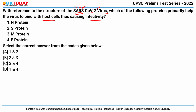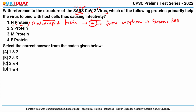First is N-protein or nucleocapsid protein. This is one of the four structural proteins of SARS-CoV-2 and it forms complexes with the genomic RNA. It plays an important role in improving the efficiency of viral transcription and assembly. However, this protein does not actually help the virus bind with its host cell.